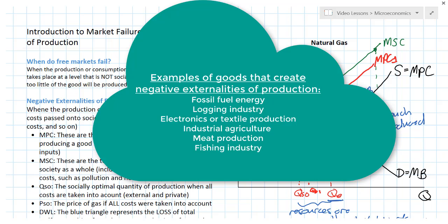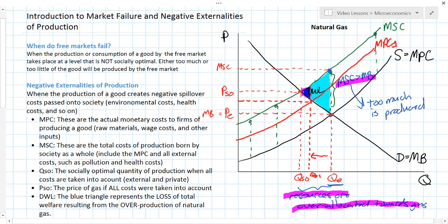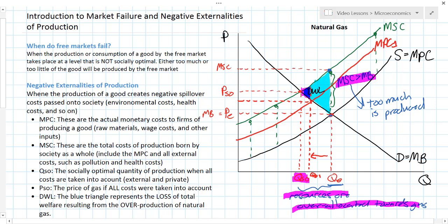Coal-based electricity and fossil fuels in general create negative externalities in the form of greenhouse gas emissions, which could contribute to climate change and global warming. The production of many consumer goods we enjoy — such as electronics and clothes — might result in negative externalities in the form of water or air pollution, or even the exploitation of workers in the factories where those goods are made. The outcome of a negative externality of production is that resources will be over-allocated towards the production of certain goods, because at the equilibrium quantity the marginal cost to society exceeds the marginal benefit, resulting in a deadweight loss.